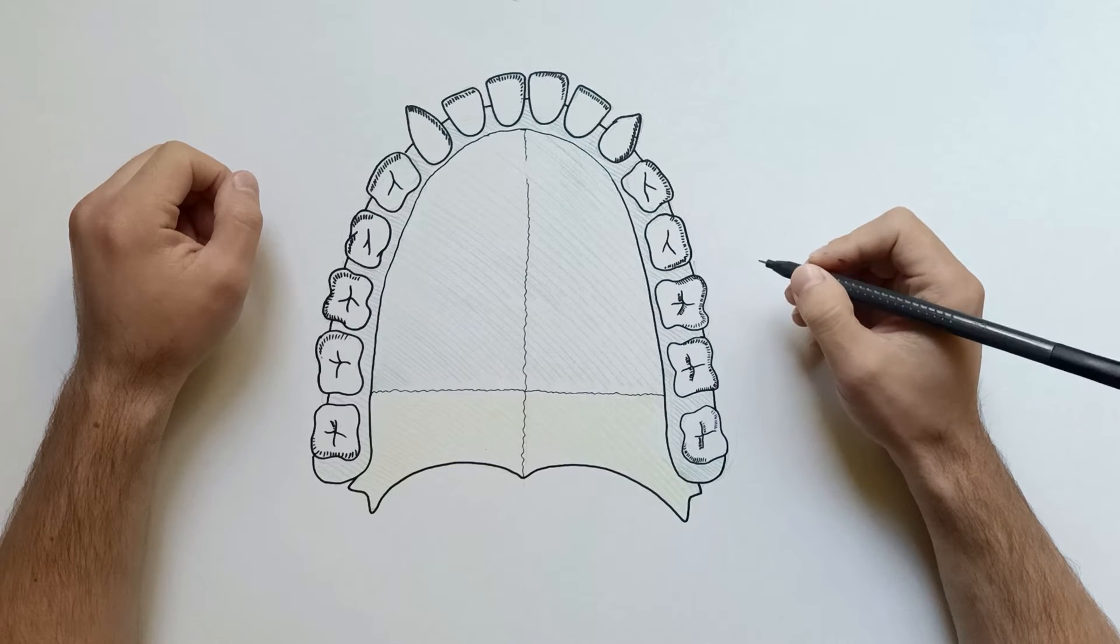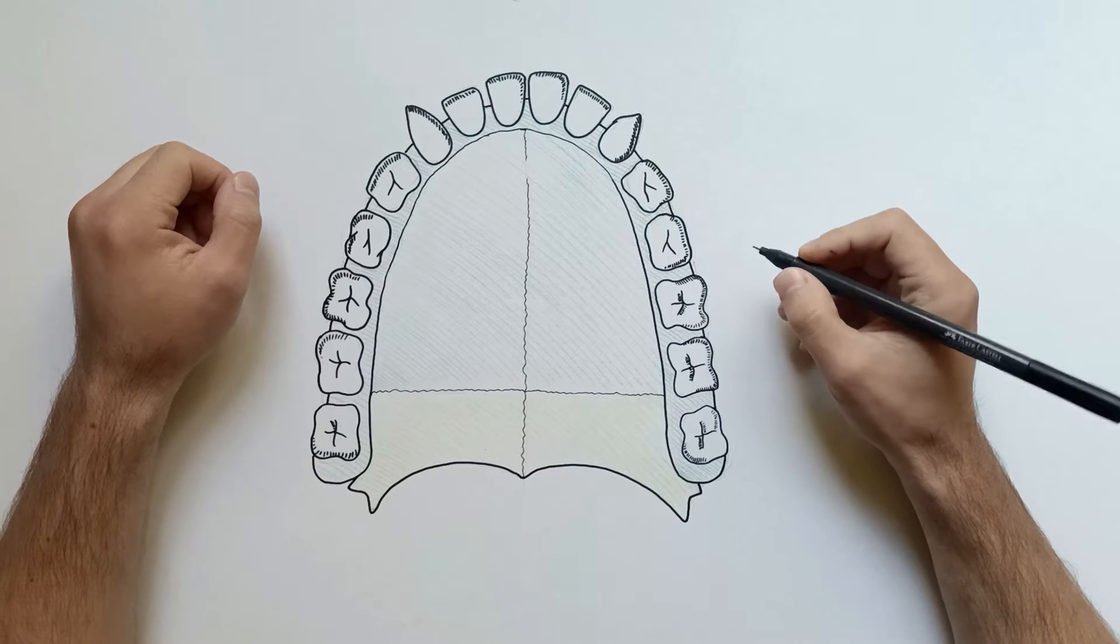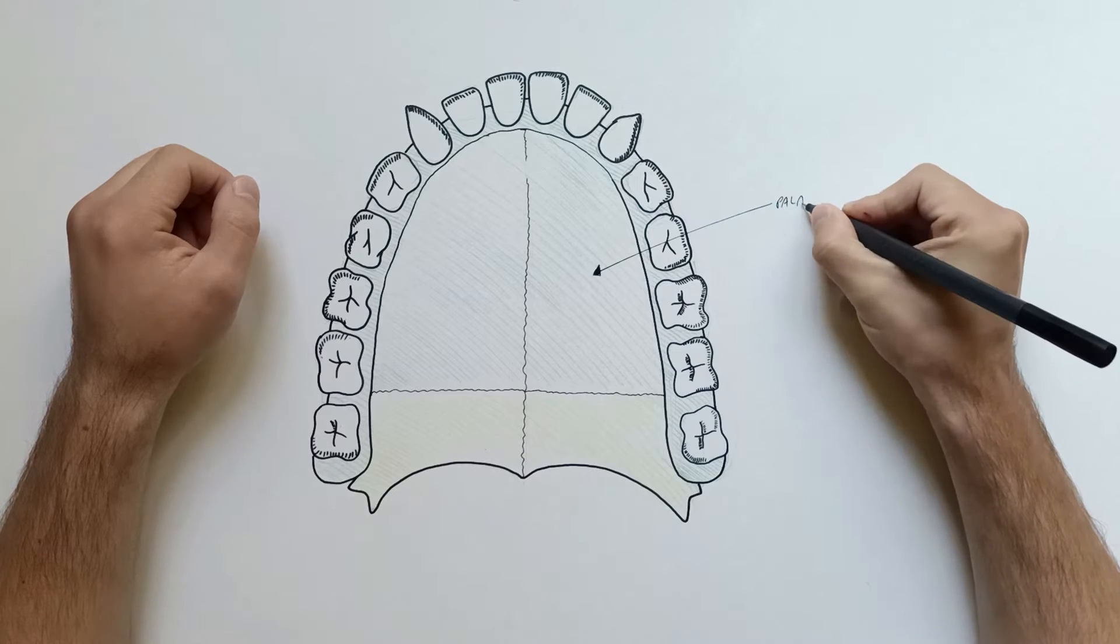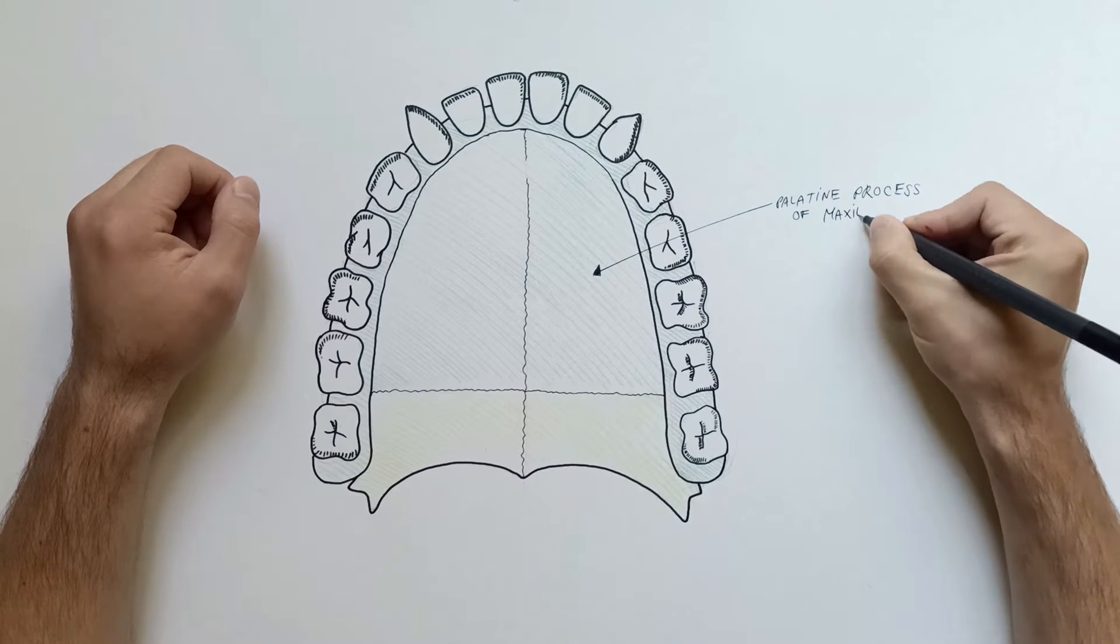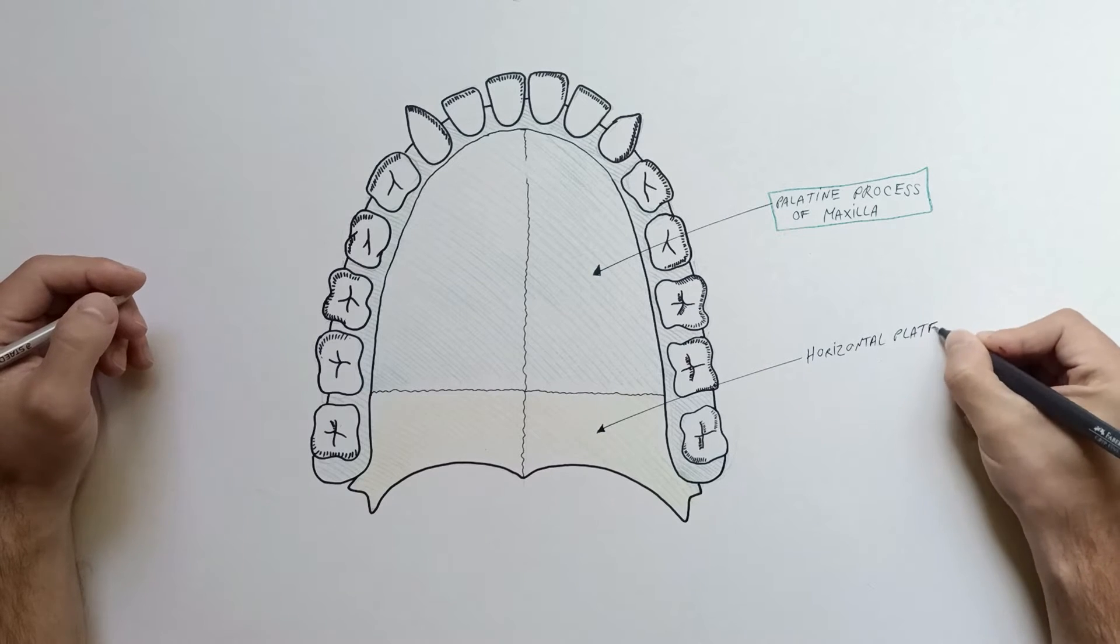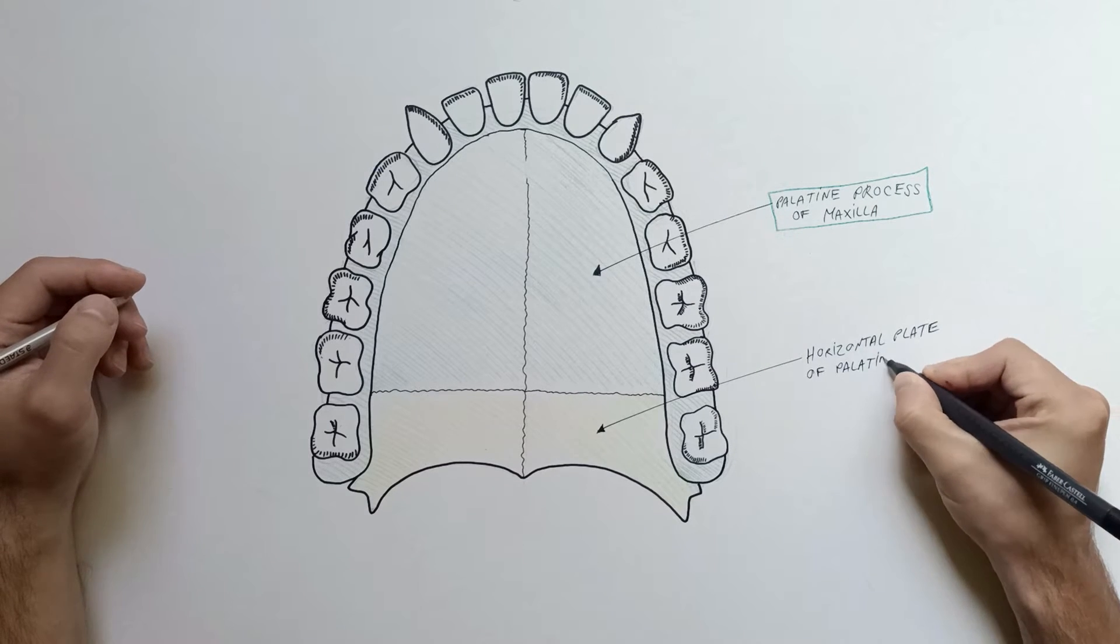The hard palate is the bony structure that intervenes between the nasal and oral cavities. Its anterior two-thirds is formed by the palatine processes of the maxillae, and the posterior one-third by the horizontal plates of the palatine bones.